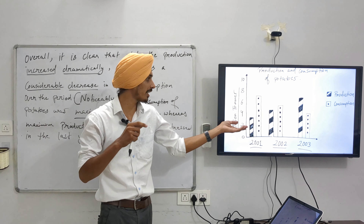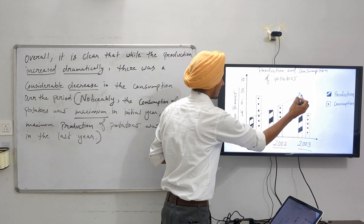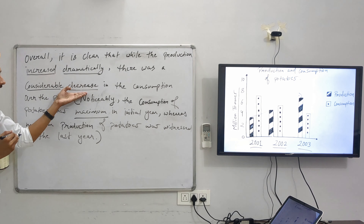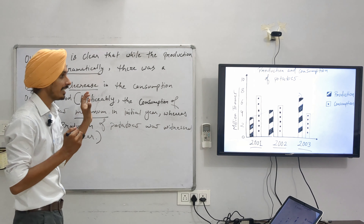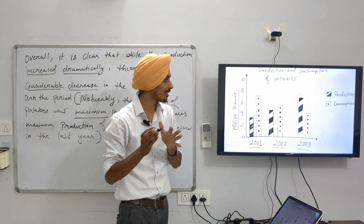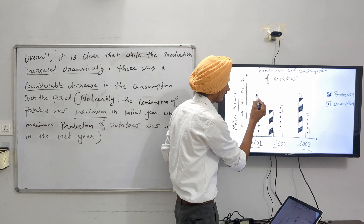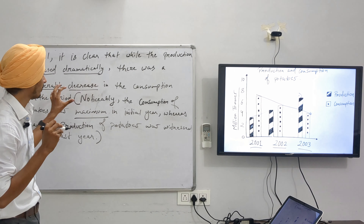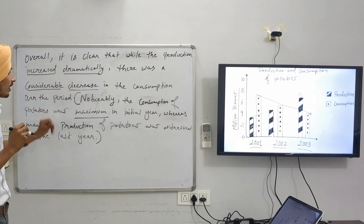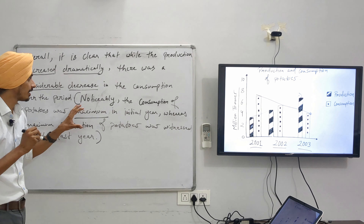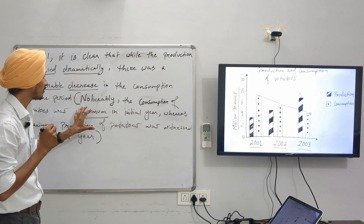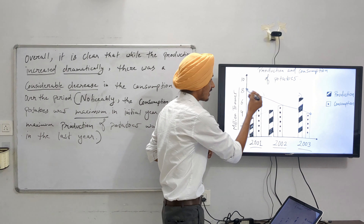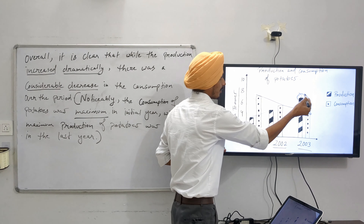In our last video we wrote the overview of increasing and decreasing trends. We wrote it as: 'Overall, it is clear that while the production increased dramatically' — increased means it went up over the period — and you can see in the chart the production increased over the period. Another sentence we wrote was: 'There was a considerable decrease in the consumption over the period.' The consumption decreased and went down over the time period. The main focus of today's video is on maximum and minimum trends.